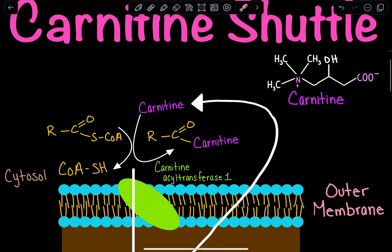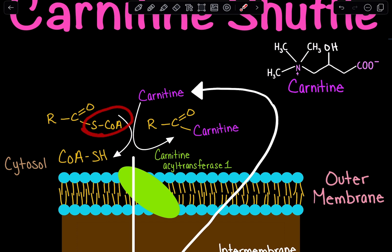What happens is that our acyl-CoA, which is essentially our fatty acid, is going to lose that coenzyme A group and form a bond with carnitine.